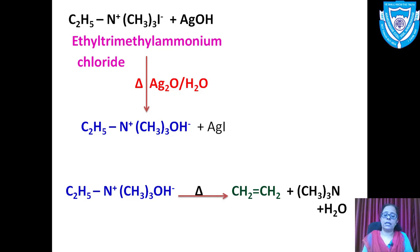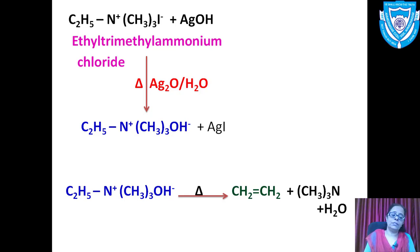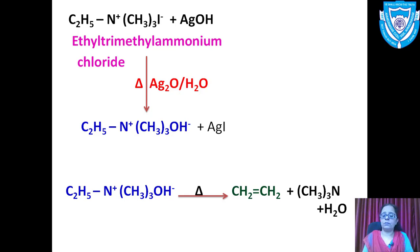Notice that the three methyl groups attached to nitrogen do not have a beta hydrogen. The ethyl group has an alpha carbon (attached to nitrogen) and a beta carbon (attached to alpha). A hydrogen is eliminated from the beta carbon to give an alkene — specifically ethene. Since the other three methyl groups have no beta carbon, there is no other option, so we get the least substituted alkene.